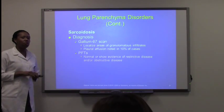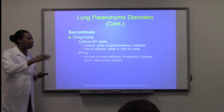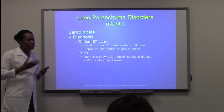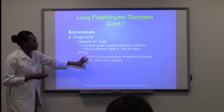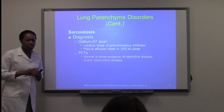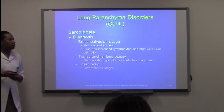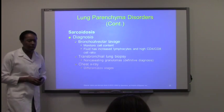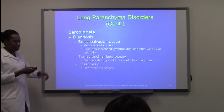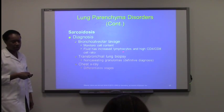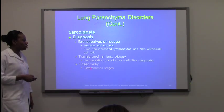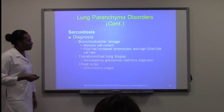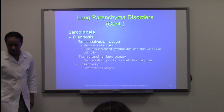Pulmonary functional testing can be normal in early disease, then becomes more restrictive as patients start to have decreased oxygen and increased carbon dioxide — pulmonary volumes will be off. On bronchoalveolar lavage, there will be a high increase in lymphocytes. Biopsy will show the non-caseating granulomas — this is a definitive diagnosis, so highlight that.